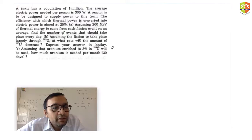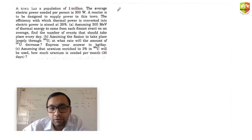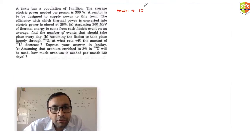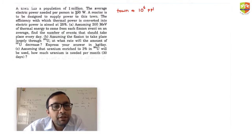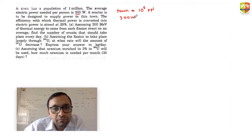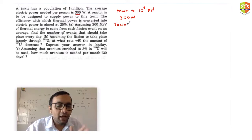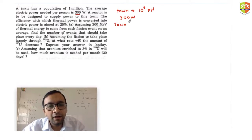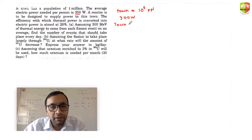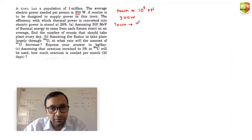There is a town which has a population of 10⁶ people. The average electric power needed per person is 300 watts. So every person's requirement is 300 W. The total requirement of the town will be 300 × 10⁶, which equals 3 × 10⁸ watts.